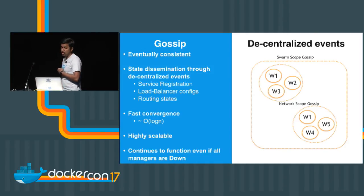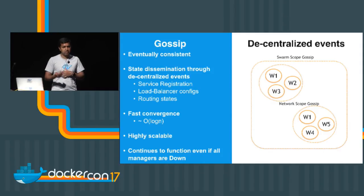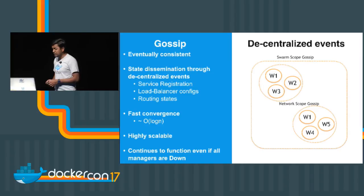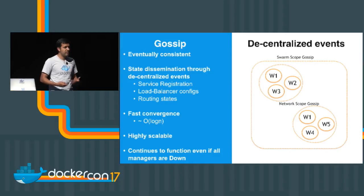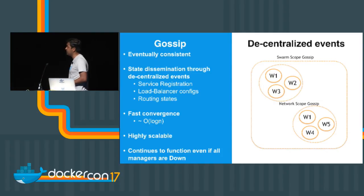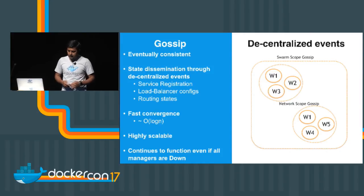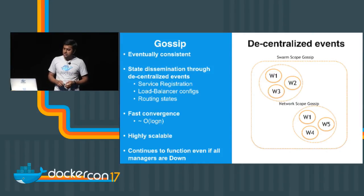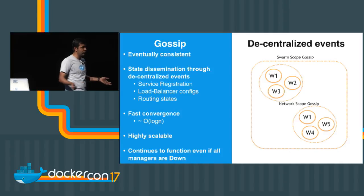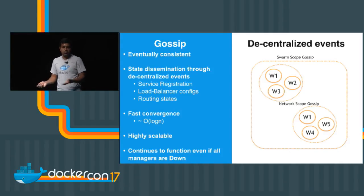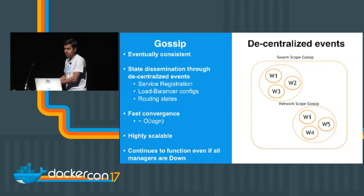The convergence is really fast — on the order of log(n), the entire cluster will converge based on the data you have. The gossip mechanism is extremely scalable and highly scalable because it is eventually consistent rather than fully consistent. The gossip mechanism today uses UDP for exchanging information and TCP for syncing for consistency. Importantly, you don't need managers for gossip to run — even when the manager goes down, containers continue to run and talk to each other because we are fully decentralized.